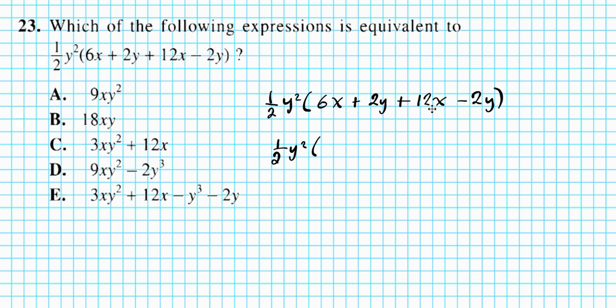And then 6x and 12x are like terms. So we can combine them into 18x. We can also combine 2y, positive 2y and negative 2y, the like terms, they add up to zero. So that's done.